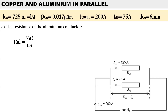To calculate the resistance of the aluminum conductor, we can use Ohm's law. The resistance of aluminum will be the volt drop divided by the current through that branch: 54.5 volts divided by 75 amps, giving 0.727 ohms.